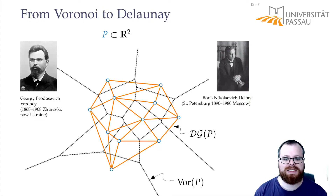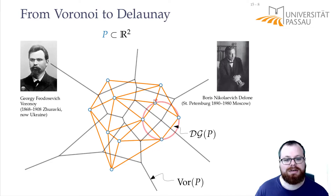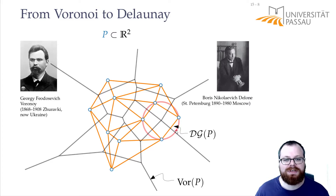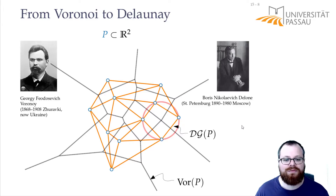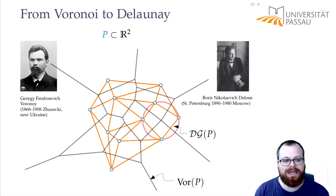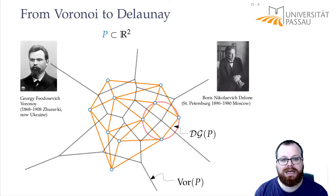The Delaunay graph is just this dual graph with all edges drawn as straight line segments. It is called the Delaunay graph because it was invented by Boris Nikolaevich Delaunay, who was also a Russian mathematician. Note that the Delaunay graph doesn't have to be a triangulation. If we move a point slightly so that four points lie on the same circle, then we have a Voronoi vertex of degree 4, and we only get a cycle of length 4 rather than a triangle.